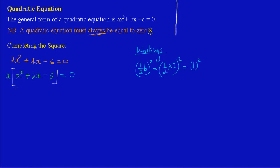Now I bring down my 2 and open the square brackets again. I'm going to add 1 squared to the middle term and subtract it from the constant term. So I have x squared plus 2x plus 1 squared, minus 3, minus 1 squared, and I close the square brackets. That is all equal to zero.